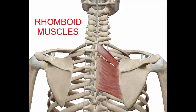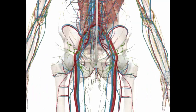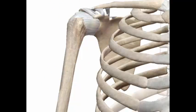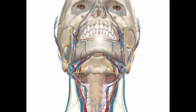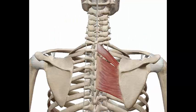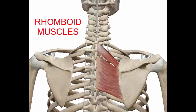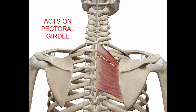Hi, I'm Atta from Easy Anatomy. In this video, we are going to talk about the rhomboid muscles. The rhomboid muscles are the muscles of the posterior thorax that act on the pectoral girdle.